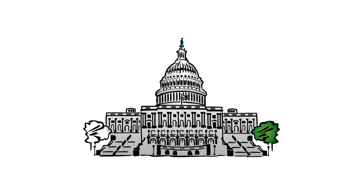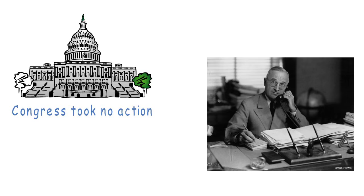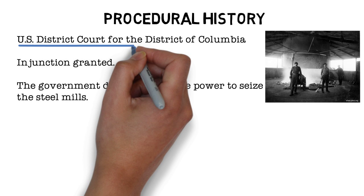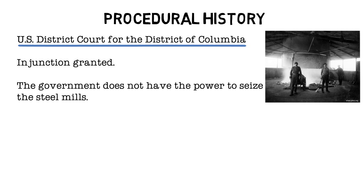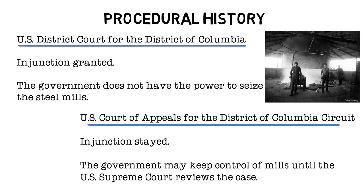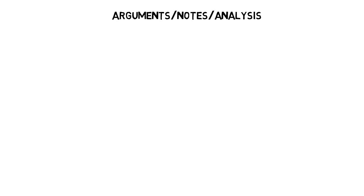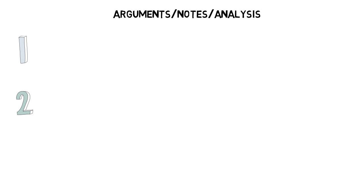Although Truman did tell Congress that he issued this executive order. So how we get to court is the petitioners applied for an injunction. The United States District Court for the District of Columbia issued the injunction, finding that the president doesn't have the power to take control of the steel mills and operate them under their own personal authority. The U.S. Court of Appeals for the District of Columbia stayed the injunction and stated the opposite — that the government may control the steel mills until the Supreme Court reviews the dispute. The case finally made its way to the United States Supreme Court under the Vinson Court.